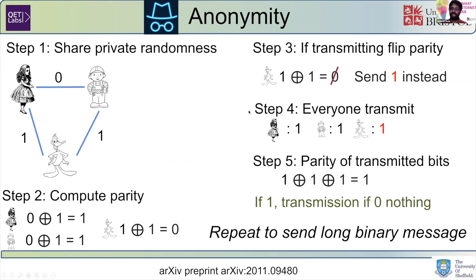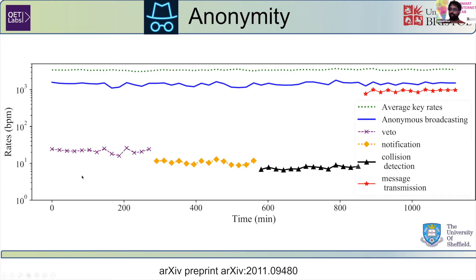Fortunately, what we have is a fully connected quantum network that shares perfectly random quantum keys, which are guaranteed to be random. And therefore we have this private randomness. So in an adaptation to our protocol, along with the University of Sheffield, we were able to implement five different anonymous protocols, including anonymous broadcasting, veto notification, and message transmission. We were also able to implement collision detection schemes where if multiple users need to transmit at the same time, the protocol can handle it.